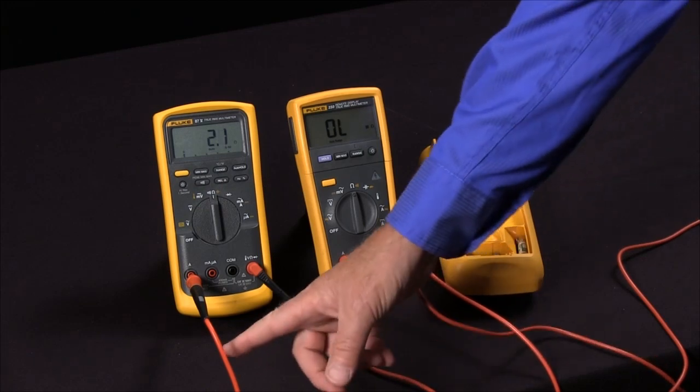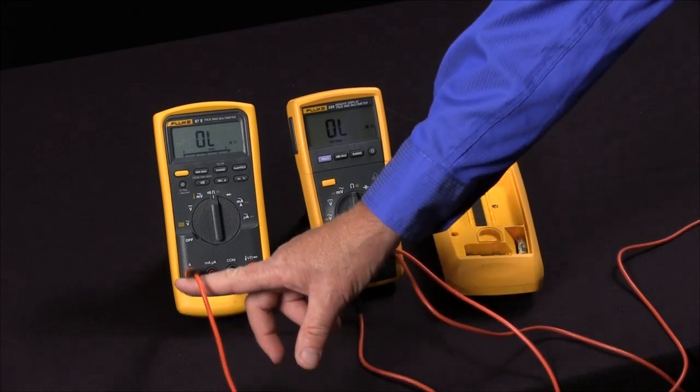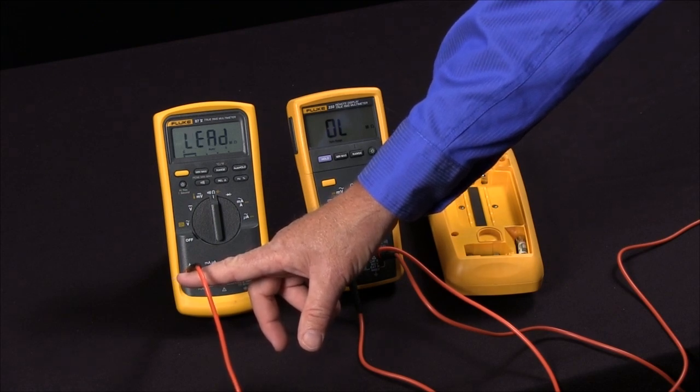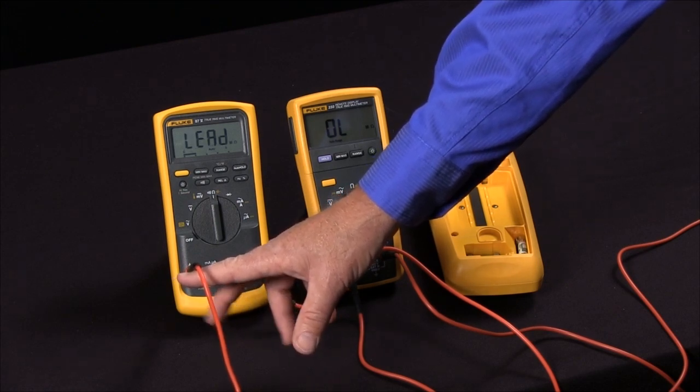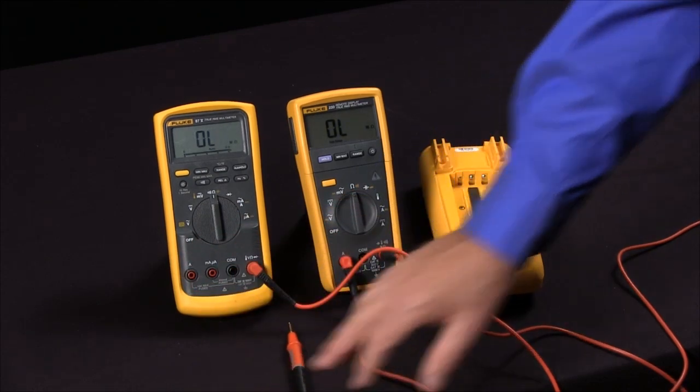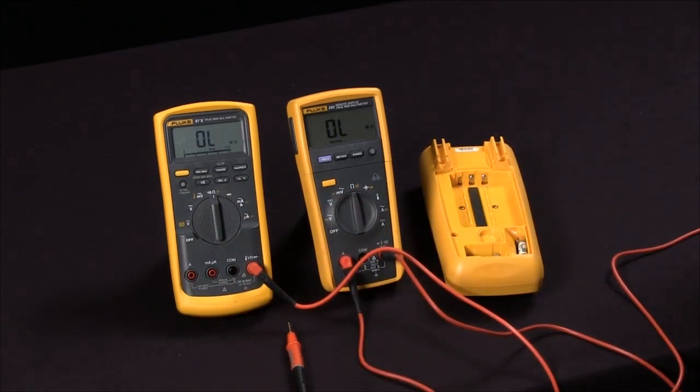One thing nice about the Fluke 87 is they have this lead alert function. So if you're trying to take a measurement with the leads in the wrong jack, it will actually give you an indication. This is also an indication that your fuses are okay. So this is a way that you can test the fuses within your multimeter without having to open the case.